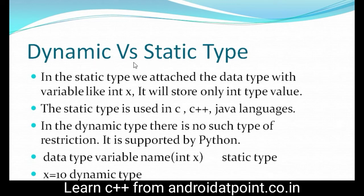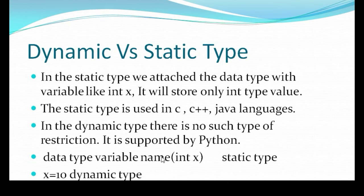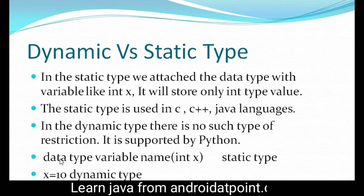Now let's explain dynamic versus static typing. In static typing, the data type is attached to the variable — for example, 'int x', meaning the variable x has data type int. The x variable can only store integer type values. Static typing is used in C, C++, and Java languages. In dynamic typing there is no such restriction — it is supported by Python. In static type we give the data type first, then the variable name, such as int x.